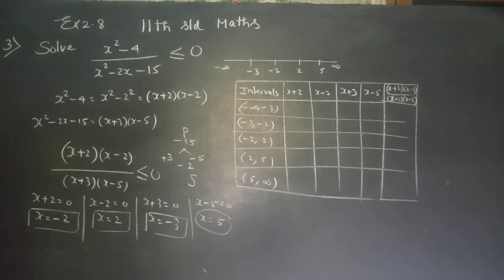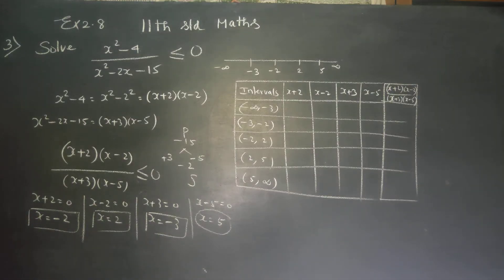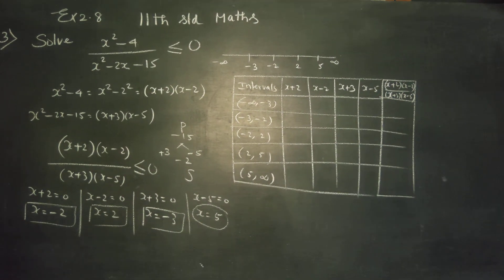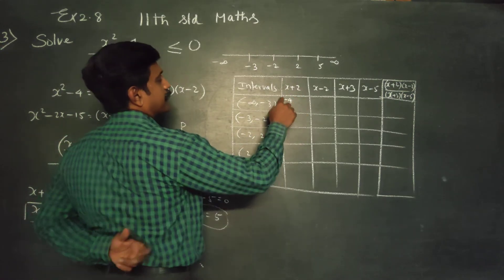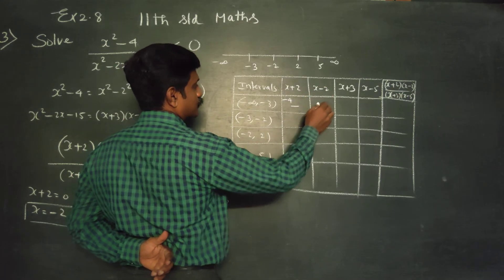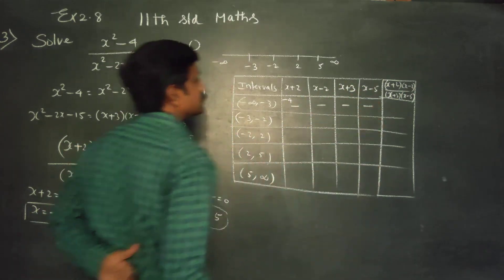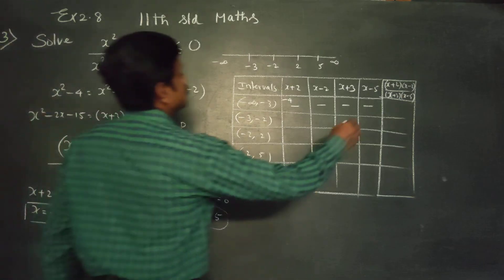Shall we start? For the first interval minus infinity to minus 3, let us choose the test number minus 4. Minus 4 plus 2 is negative, minus 4 minus 2 is negative, minus 4 plus 3 is negative 1, minus 4 minus 5 is negative. The overall answer is positive for this interval.